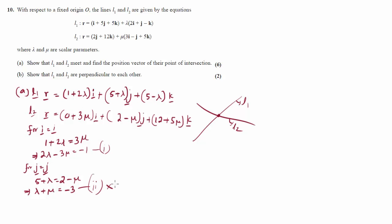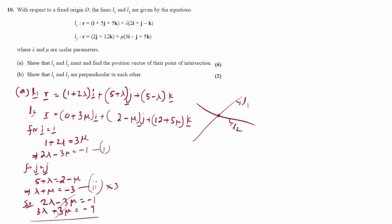We can simplify this. Multiplying equation 2 by 3 gives 3 lambda plus 3 mu equals minus 9. Adding this to equation 1: 2 lambda minus 3 mu equals minus 1, the 3 mu terms cancel, and we get 5 lambda equals minus 2.